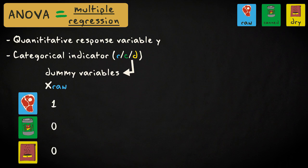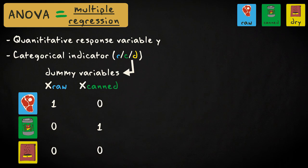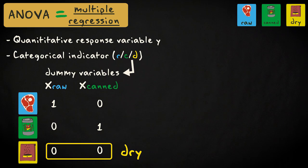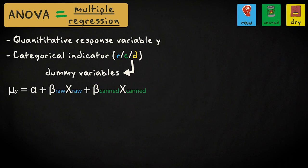The first dummy variable, x sub raw, distinguishes between cats fed on a raw meat diet and all other cats. The second dummy variable, x sub canned, distinguishes between cats on canned food and all other cats. Cats fed on dry food are identified by a score of 0 on both dummies. The regression model is: mu sub y equals alpha plus beta sub raw times x sub raw plus beta sub canned times x sub canned.